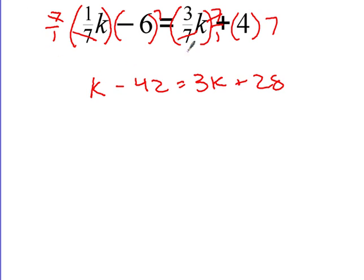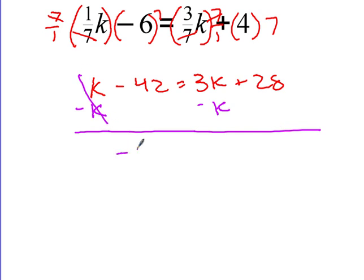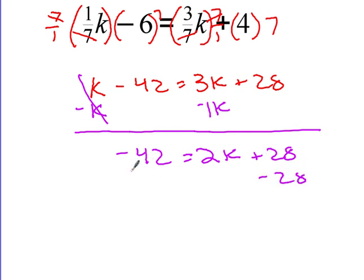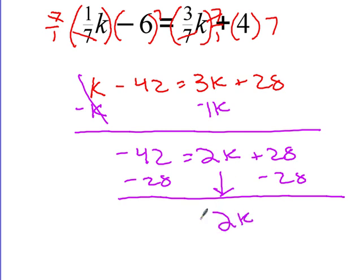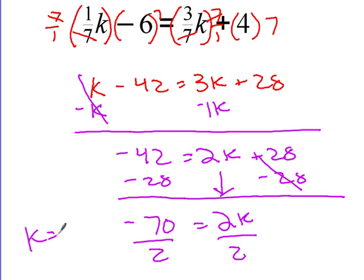Now I get to solve like normal. I'll get my variable to the same side first: subtract k from both sides. That gives me negative 42 equals 2k plus 28. Subtract 28 from both sides: negative 42 minus 28 is negative 70. So negative 70 equals 2k. Divide both sides by 2 — negative divided by positive is always negative — and k equals negative 35.